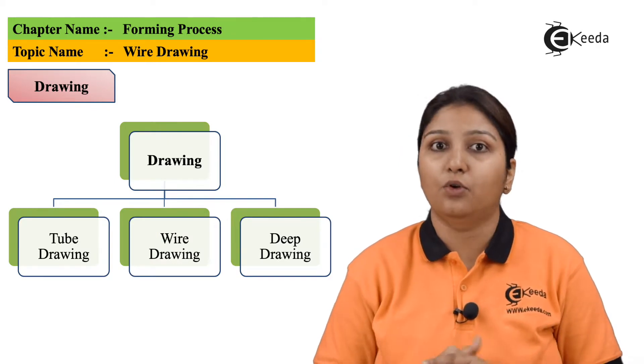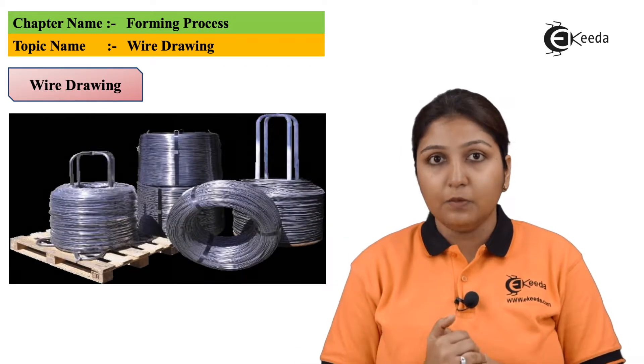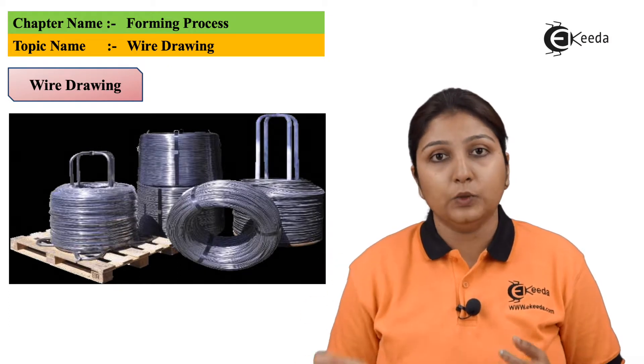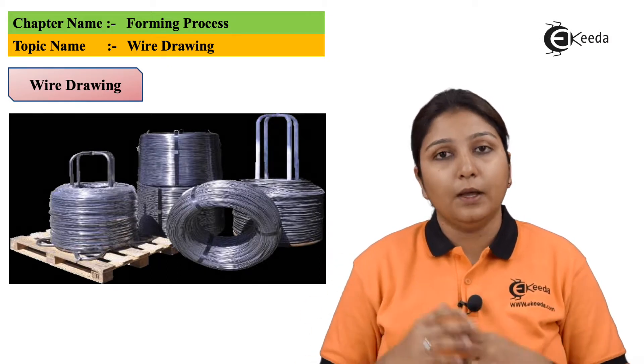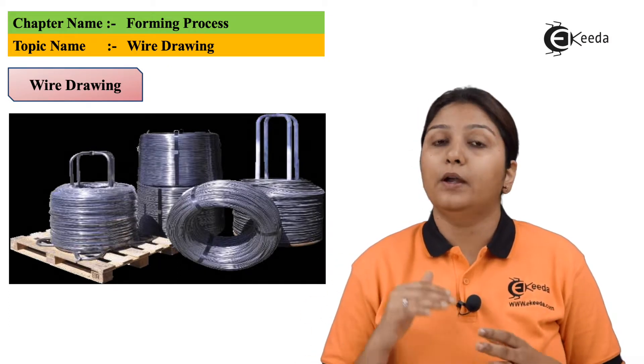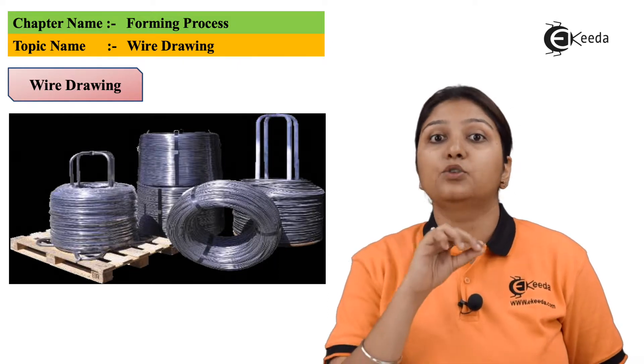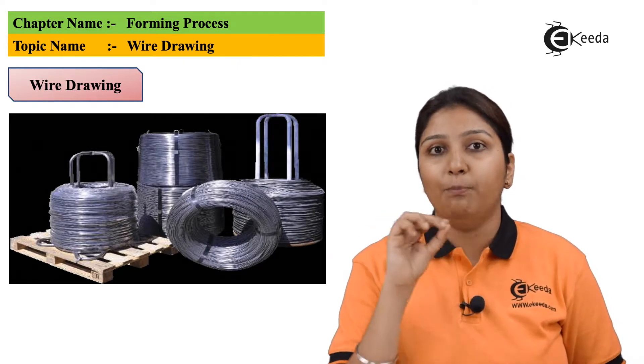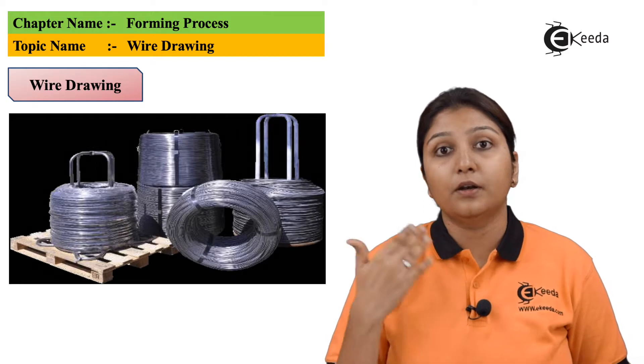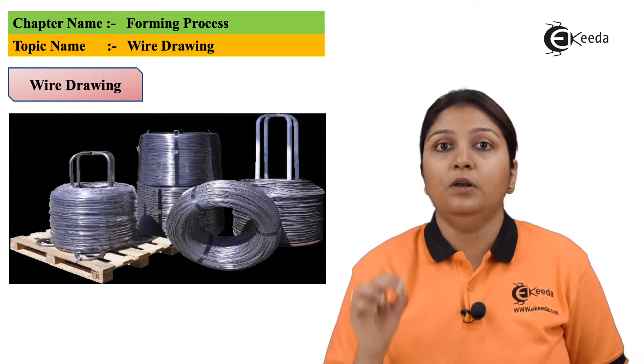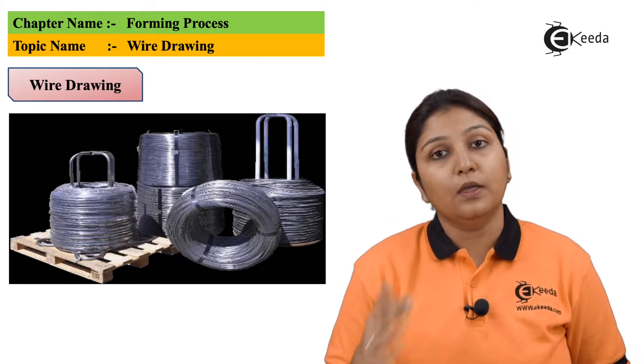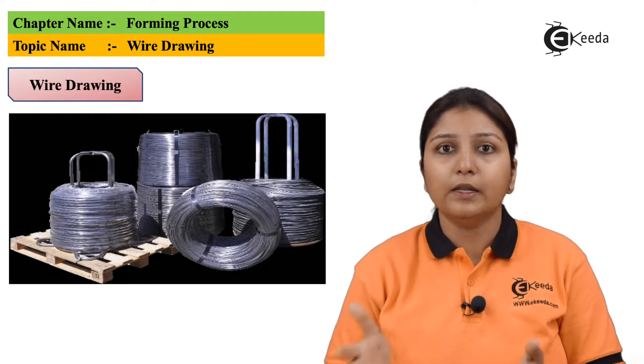In this diagram you can see that there are certain wires which are winded. How they are made? They are made by wire drawing process which is nothing but extrusion process - extrusion of billets which is further reduced to form small diameter wires. They are again winded and can be used in their daily purposes.